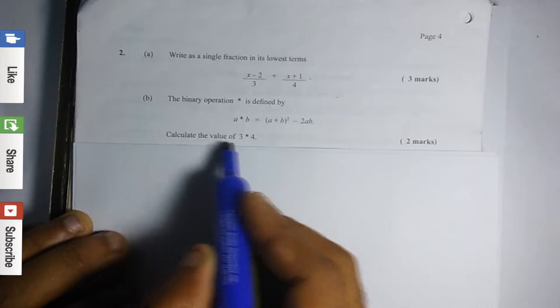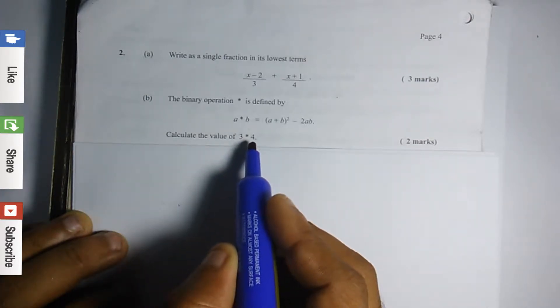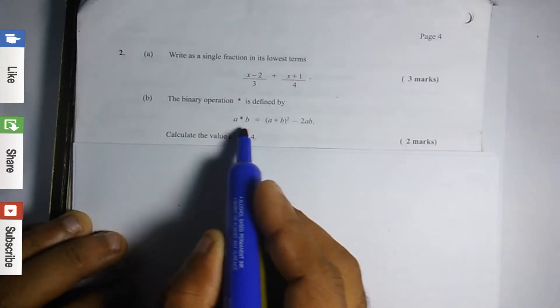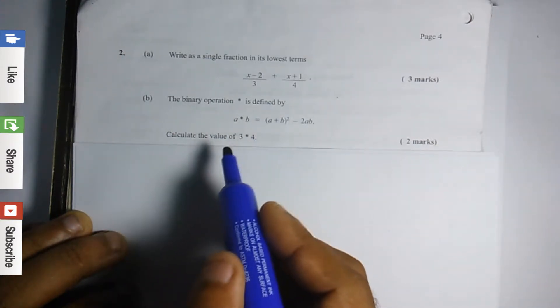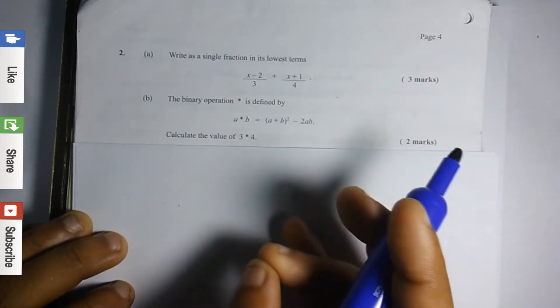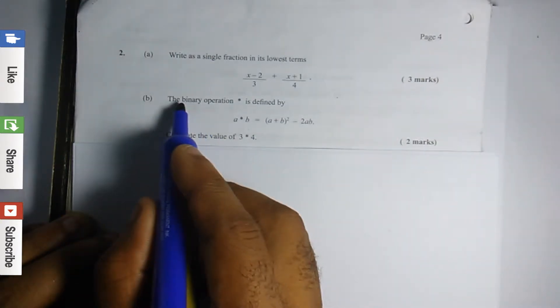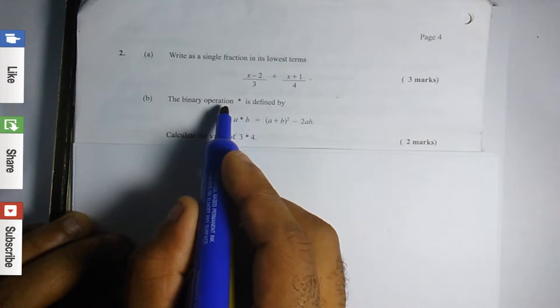We're supposed to calculate the value of 3 star 4. So this symbol doesn't mean to add, subtract, multiply or divide. It's only representing the binary operation. So remember that.